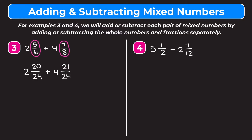Now what we're going to do is add the whole number parts and the fraction parts separately. So 2 plus 4 is going to give us 6 as our whole number. And then we're going to add 20 twenty-fourths plus 21 twenty-fourths — we add the numerators and we get 41. We keep the denominator the same, so we get 41 twenty-fourths. So we have 6 and 41 twenty-fourths.